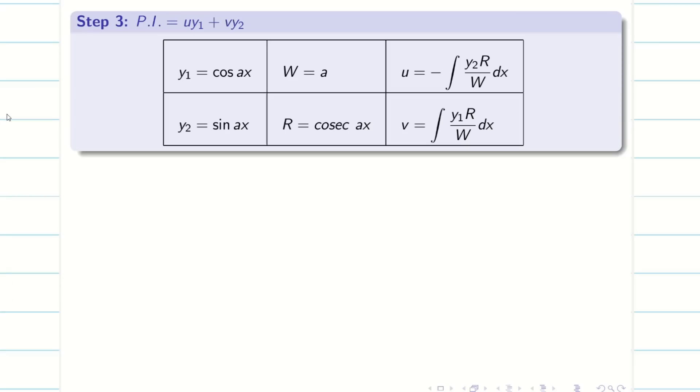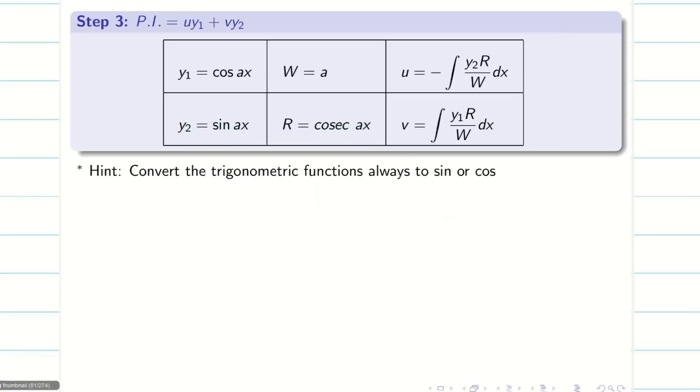Now, you have to think like the previous problem. Cosecant is there. Cosecant means 1 by sin. So, if I multiply with this, problem gets simple. So, u is simple here. I will take u is equal to minus y₂R by W dx. And then, sin into cosecant. Both will get cancelled. Or you can write like sin by sin. Then, you cancel. That is also good. So, minus 1/a integral dx. When you integrate, minus x/a is my answer for u.